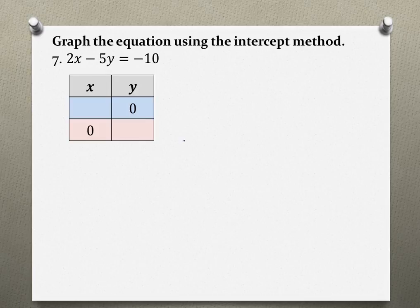So first I'm going to find my x-intercept, and as you can see there's a zero for y. I'm going to plug in a zero for y in my original equation: 2x minus 5 times zero, and I'm going to solve for x. So right over here, negative 5 times zero is just zero, gone, and I'm left with 2x equals negative 10. Solving for x, dividing by 2 on both sides.